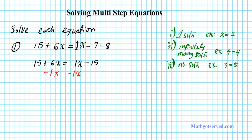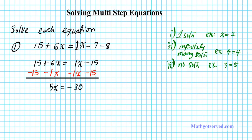Now this is positive 15, so we subtract 15 from both sides of the equation. These two are opposite so they add up to 0. Positive 6x minus 1x is positive 5x. On the right side, those two opposites add up to 0, and negative 15 minus 15 — the signs are the same, so we add and keep the sign — is negative 30. To finish this up, we divide both sides by 5 to isolate x, and we get x equals negative 6.